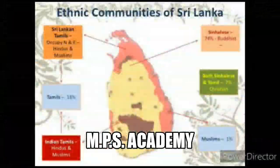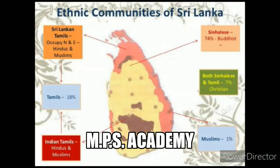Now we talk about Sri Lanka. What is the ethnic composition of Sri Lanka? Sinhalese people make up 74% and Tamil people make up 18% of the population. There are two Tamil groups — Sri Lankan Tamil and Indian Tamil. About 1% are Muslim. Around 7% are Christians, who may be both Tamil and Sinhalese.